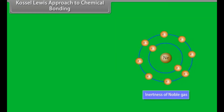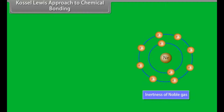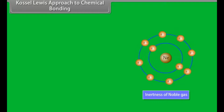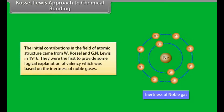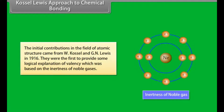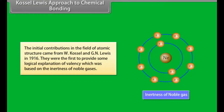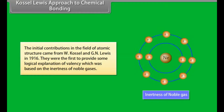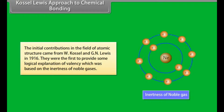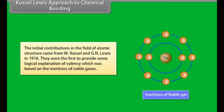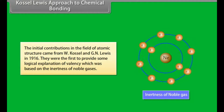Cossel-Lewis approach to chemical bonding. The developments in the field of atomic structure provided foundations for various theories of valency. The initial contributions in this field came from W. Cossel and G. N. Lewis in 1916. They were the first to provide some logical explanation of valency, which was based on the inertness of noble gases.